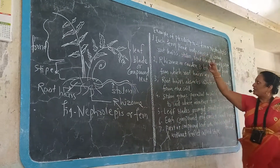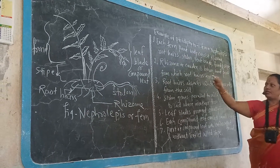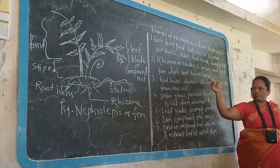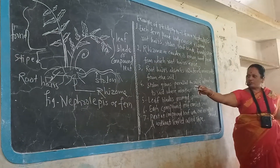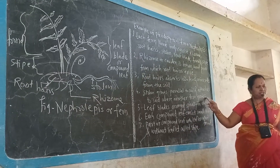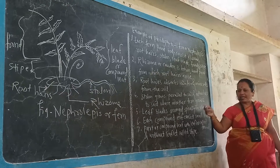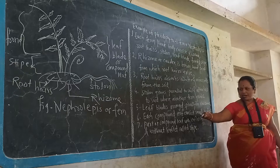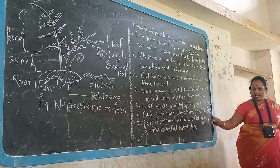Each Nephrolepis body consists of a rhizome, root hairs, stolon, leaf blade, frond, and stipe. The rhizome or codex is brown in color and hard, from which root hairs arise to absorb water and minerals. The stolon grows parallel to the soil and where it attaches, another fern grows. Leaf blades are arranged spirally on the rhizome, and each compound leaf consists of small leaflets on both sides — the part with leaflets is called the frond and without leaflets, the stipe.